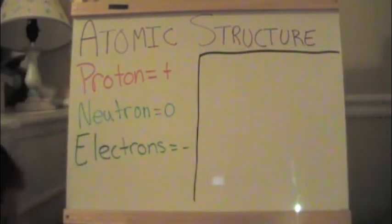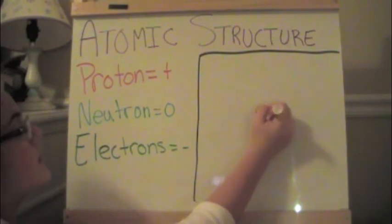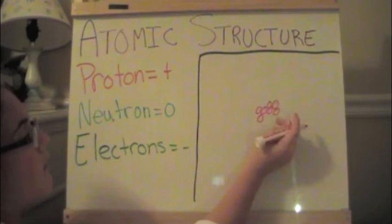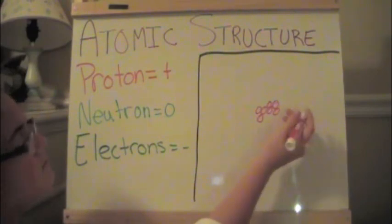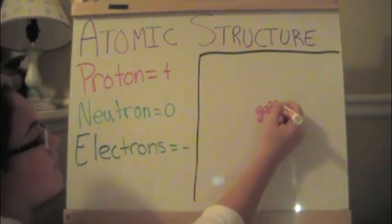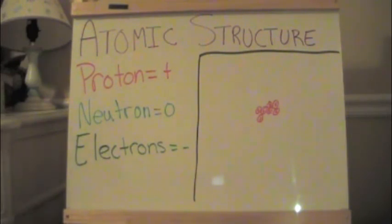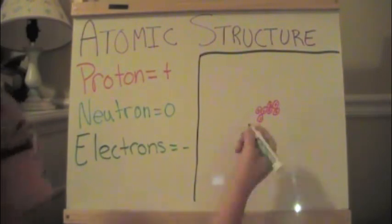Well, in the nucleus are the protons and neutrons. So, let's say this atom has seven protons, and there are seven neutrons.